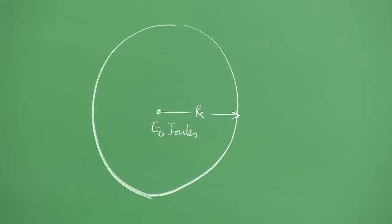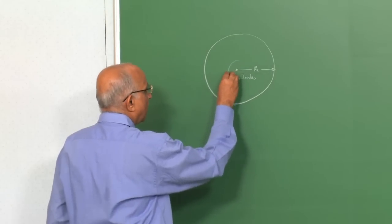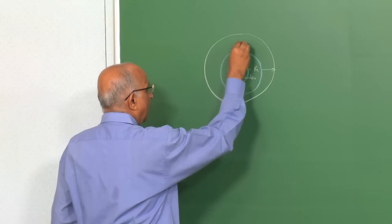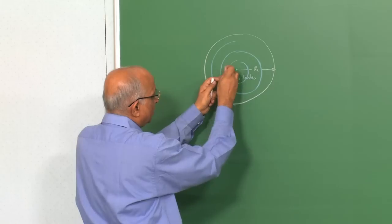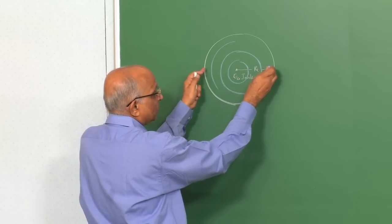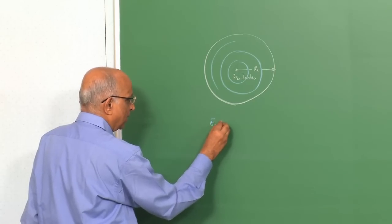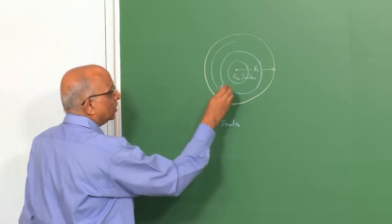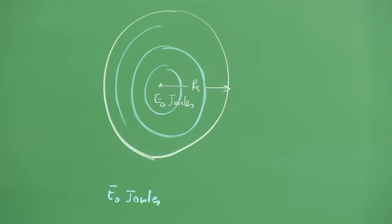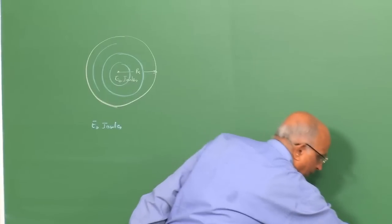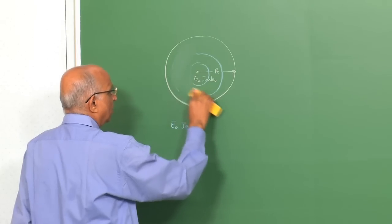We looked at the energy balance and what the blast wave does: you form a blast wave, it keeps propagating out. At different times it keeps moving out, and the energy which is deposited is dispersed within the region of the blast wave as it propagates out. We looked at conservation of energy — E₀ joules which is dissipated in the medium and creates the spherical blast wave. Let us quickly go through the points, as we will continue on the energy release and how the blast wave changes.